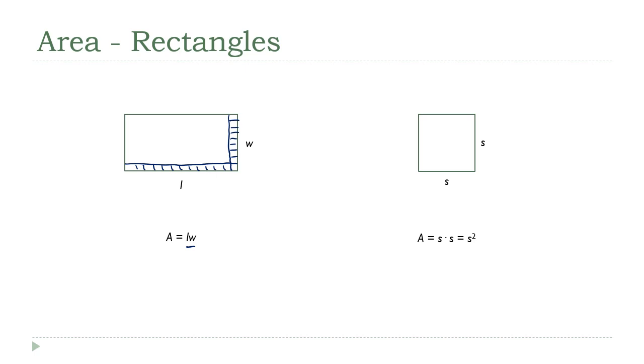In the special case where the figure is a square, we know that both sides are the same. So if we call that common length S, then the area becomes S times S, which is just S squared.